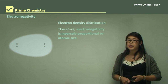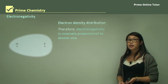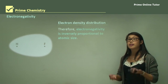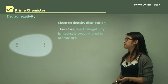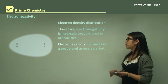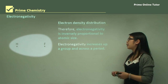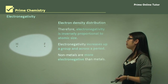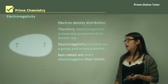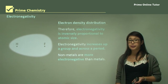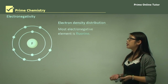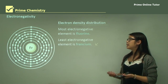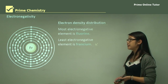Therefore, electronegativity is inversely proportional to atomic size — the smaller the atom, the more electronegative it's going to be, and the larger the atom, the less electronegative. Electronegativity increases up a group as well as across a period, and nonmetals are more electronegative than metals. The most electronegative element is fluorine, whereas the least electronegative element is francium.